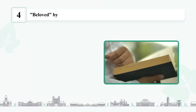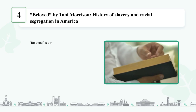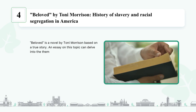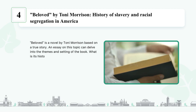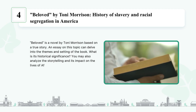'Beloved' by Toni Morrison: history of slavery and racial segregation in America. 'Beloved' is a novel by Toni Morrison based on a true story. An essay on this topic can delve into the themes and setting of the book. What is its historical significance? You may also analyze the storytelling and its impact on the lives of African Americans.